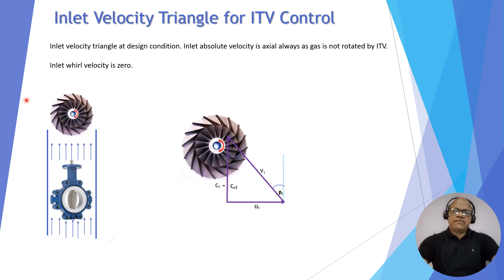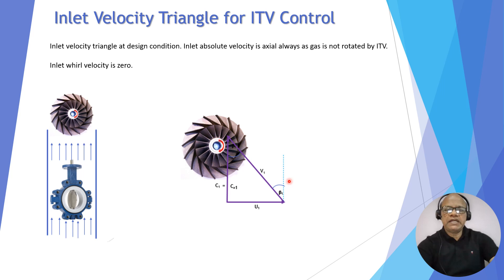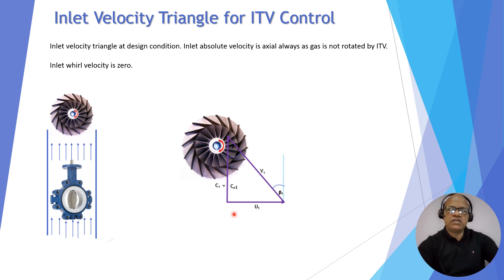For the inlet velocity triangle of ITV, you can see the flow through the impeller is axial. C1 equals CA1, U1 is the inlet mean tip velocity, and V1 is the inlet mean relative velocity. Beta 1 is the blade inlet angle with respect to axial. Both triangles are the same, and the whirl component CW1 is zero because C1 is axial.